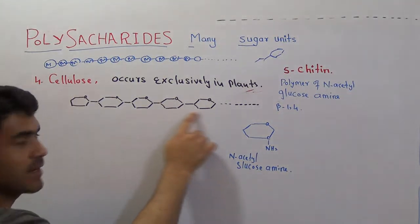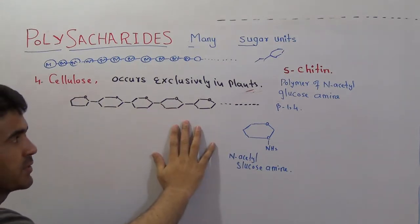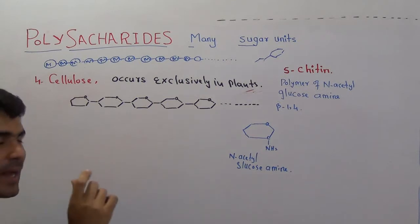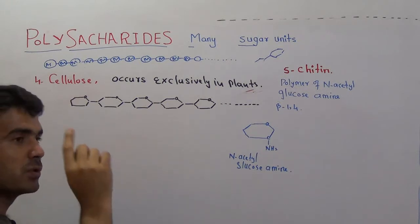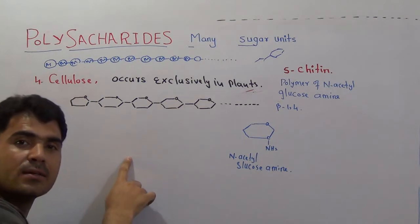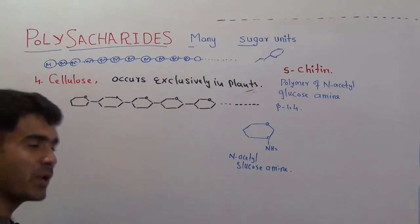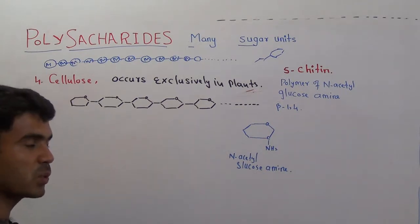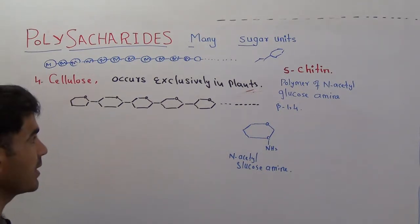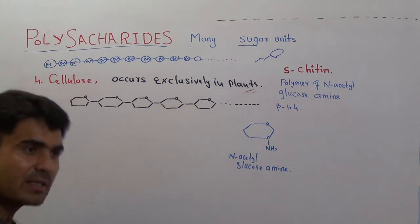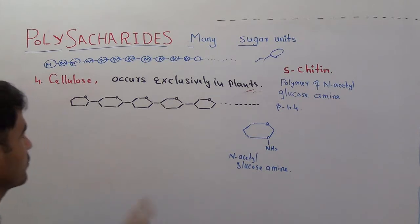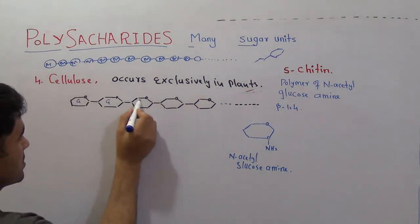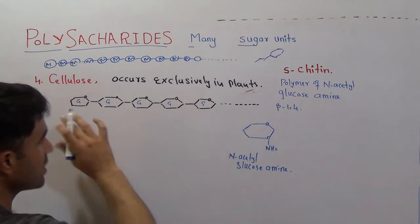It looks like glycogen and starch because whenever you see there are all glucose units linked together, every student will start thinking that it looks like starch and glycogen. But there is a difference. Of course each unit is glucose — G G G G — meaning many glucose units are linked together.